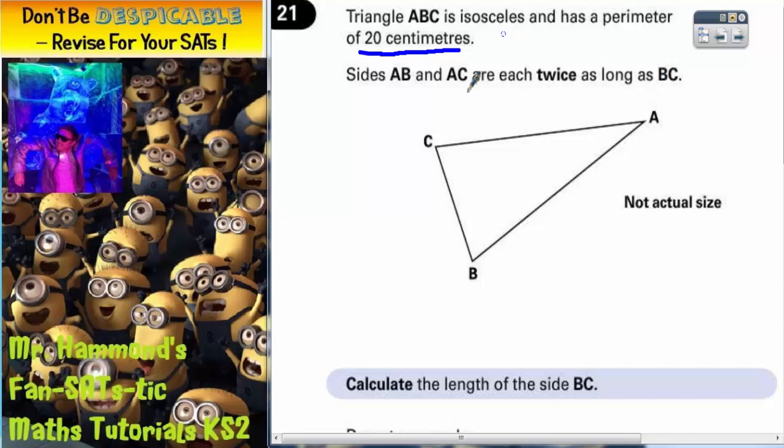Now there's a lot of writing there but we've got to slow down and not panic. If it's an isosceles triangle it means it's got two sides which are the same. And we are told that AB, which is this side that connects A to B, and AC, which is the side that connects A to C, are each twice as long as BC. So these two must be the two sides that are the same.